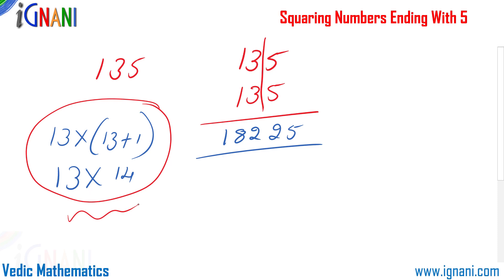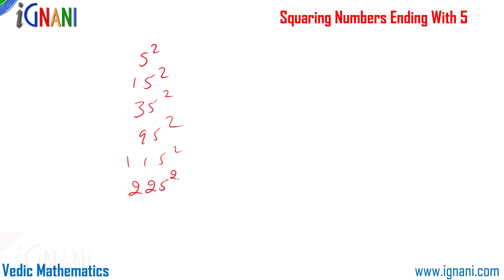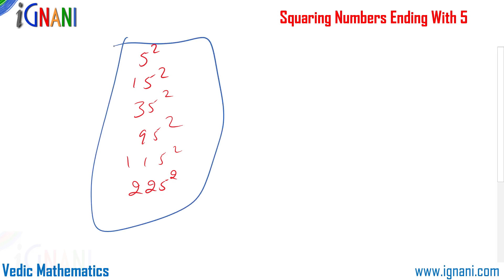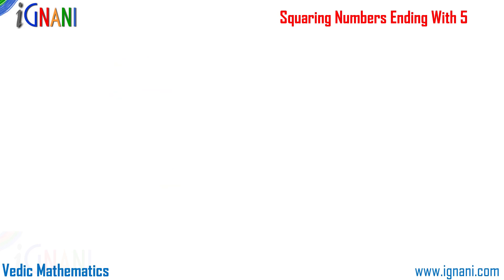This formula of Vedic Mathematics works for any numbers whose last digits add up to 10 and the remaining digits are the same. The same formula works while squaring numbers ending with 5 because when you square two numbers ending with 5, the rightmost digits add to 10 and the remaining digits are the same. This is an extension to this principle not known to many — the rule applies not only to numbers ending with 5 but to any multiplication where the last digits add to 10 and the remaining digits are the same.